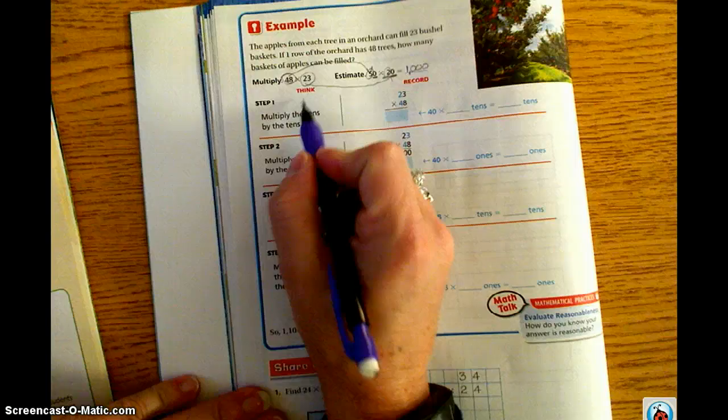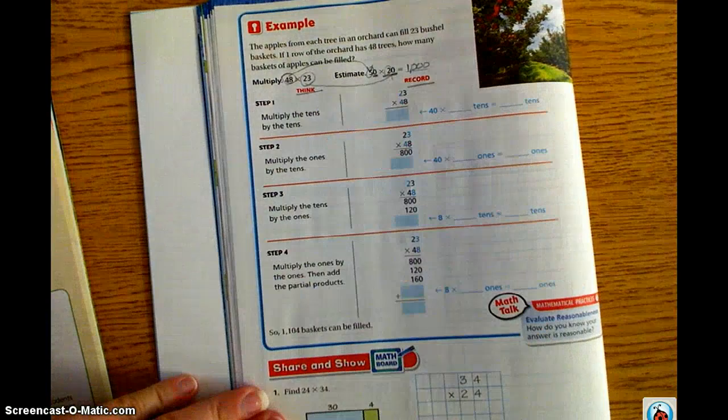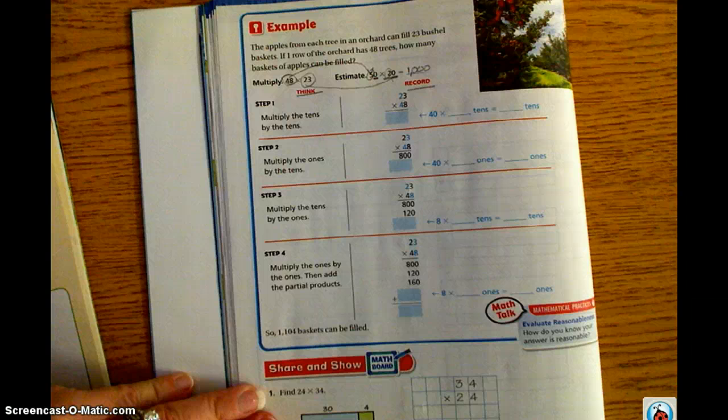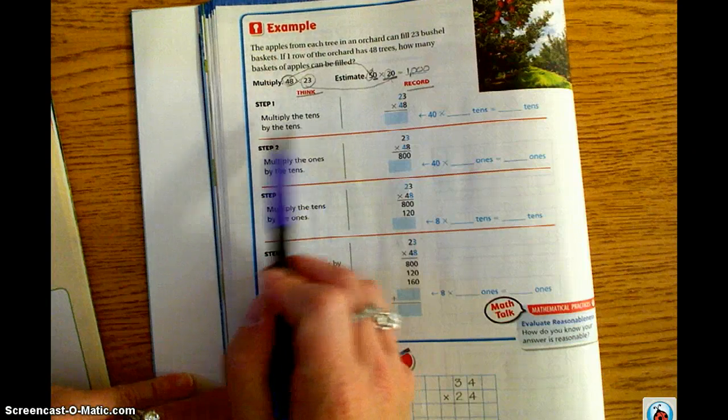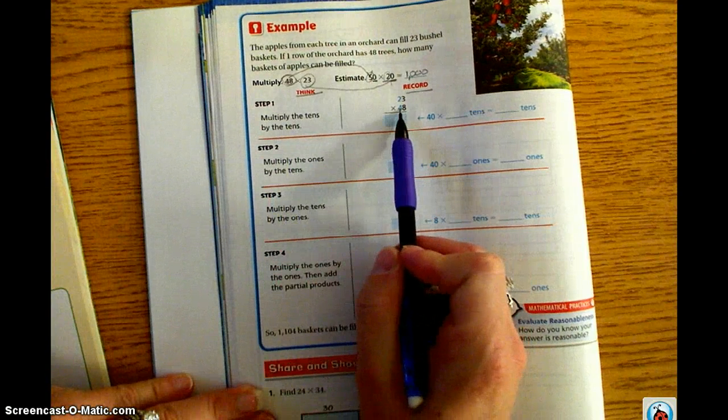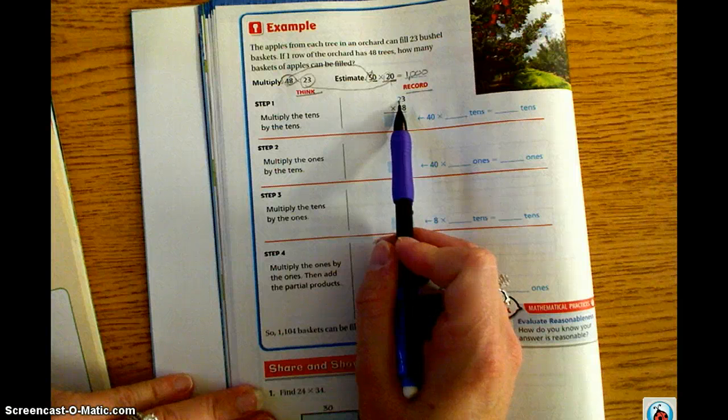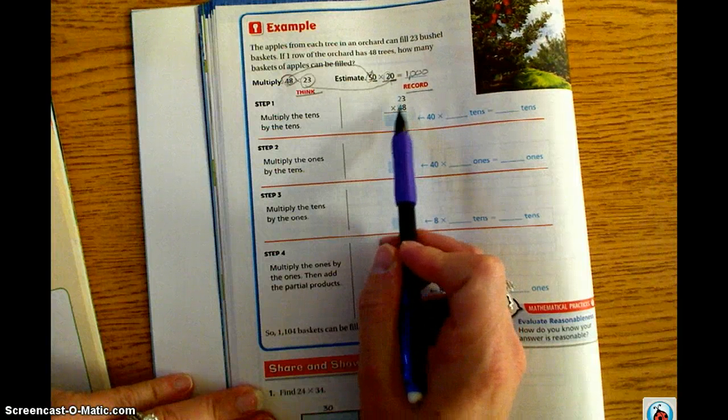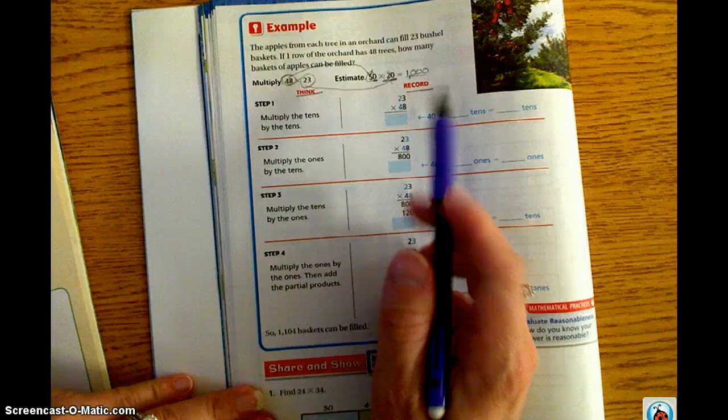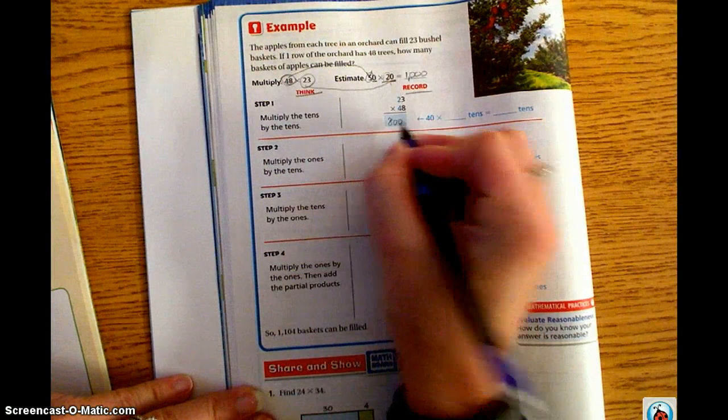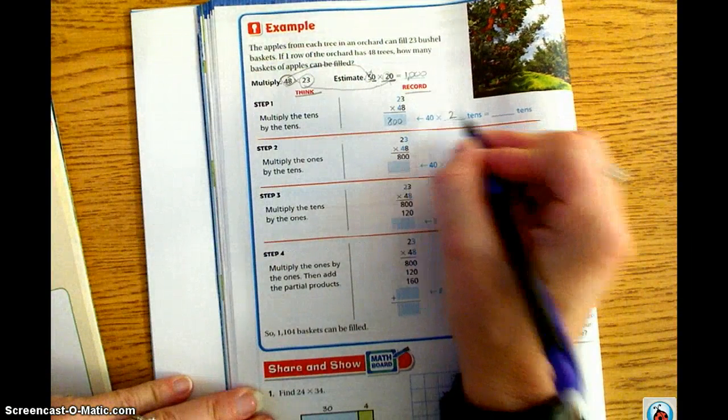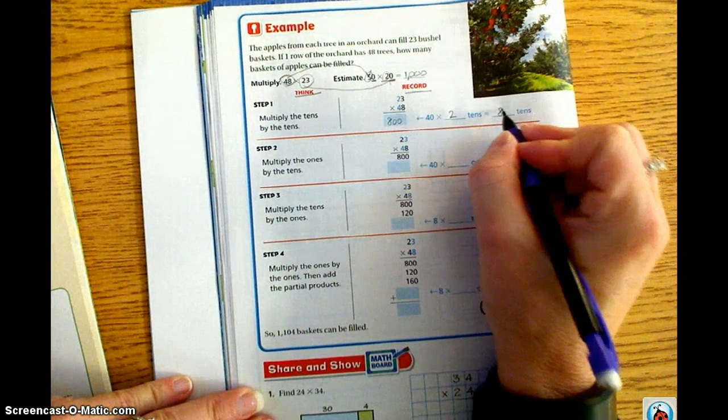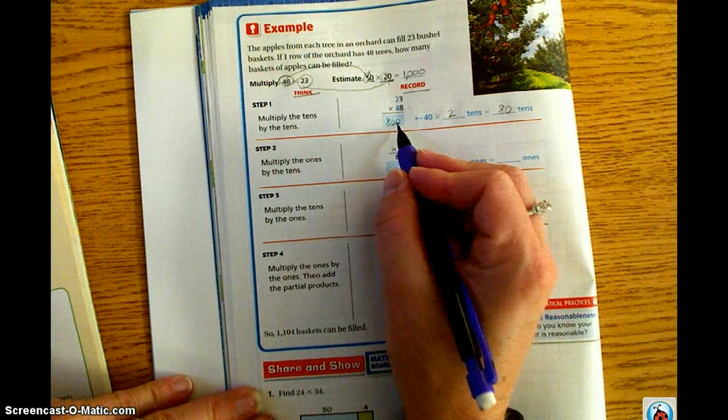Now, they want you to think, and they want you to record. So you're going to be thinking about the steps we just did on the previous problem, and recording the answers that you get for each of those. So our first step is to multiply the tens by the tens. So we have 4 tens times 2 tens is going to be 800. So 40 times 2 tens equals 80 tens, or 800.